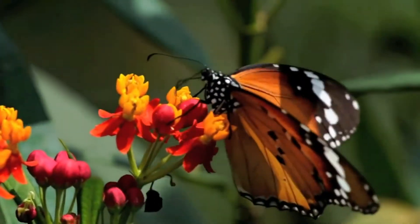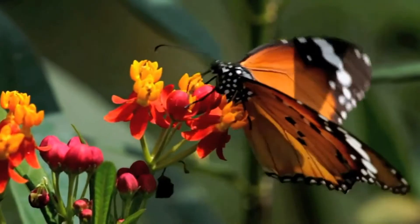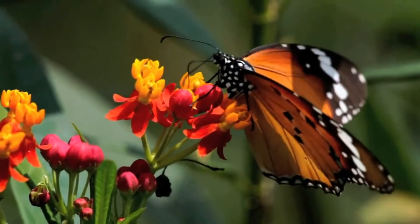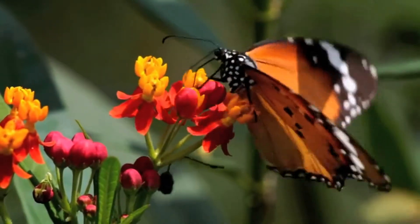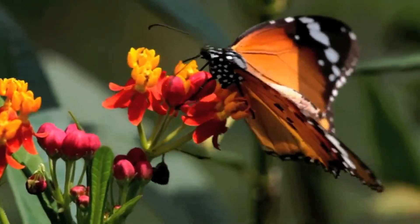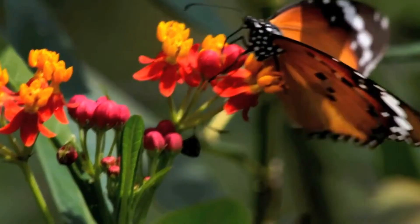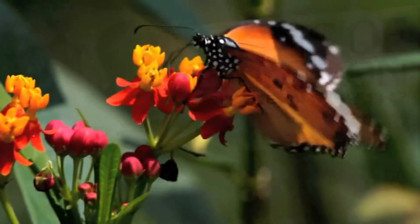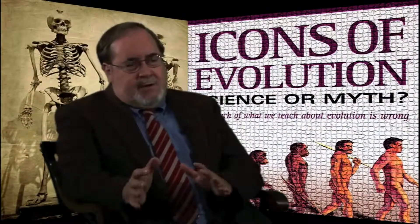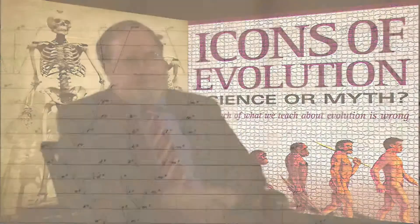Although they're both wings and they're both used for flying, the internal structure of the bat's wing is quite different from that of a butterfly, radically different. And so analogy was not used to classify organisms, whereas homology was.